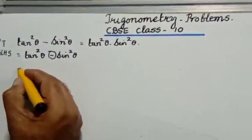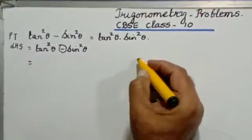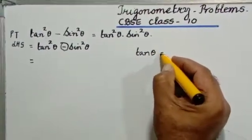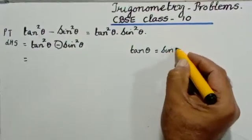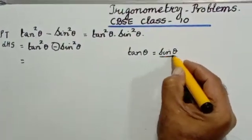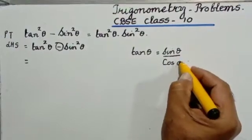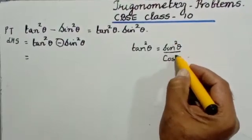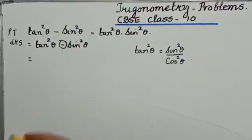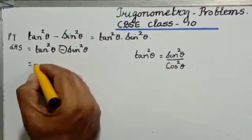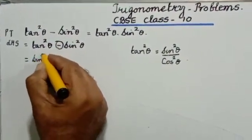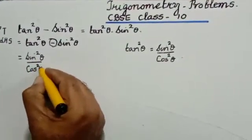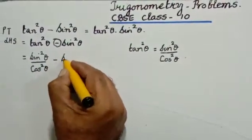We know that tangent of theta is given by sin of theta divided by cos of theta. So tan squared theta will be sin squared theta divided by cos squared theta. So instead of tan squared theta, I will write it as sin squared theta divided by cos squared theta, minus sin squared theta.